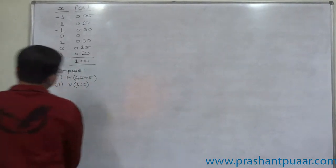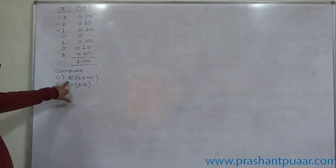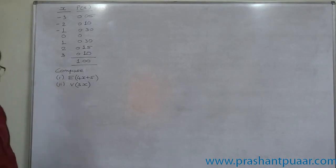In this case, we are required to compute E of 4x plus 5 and V of 3x.